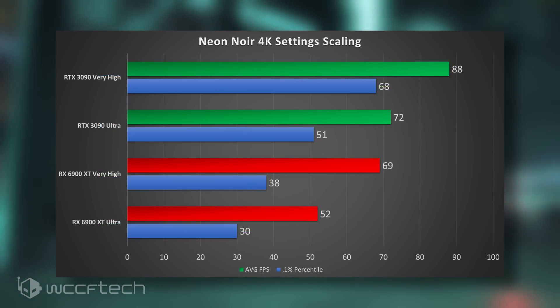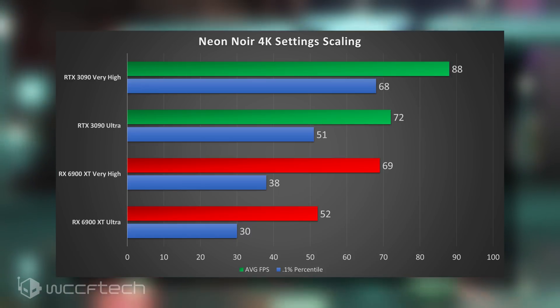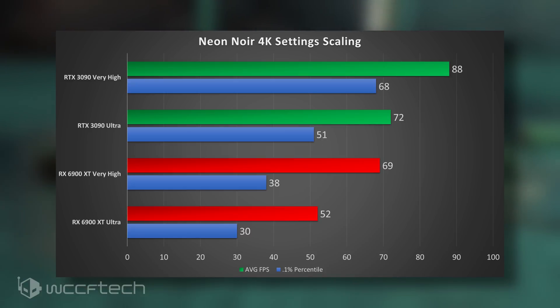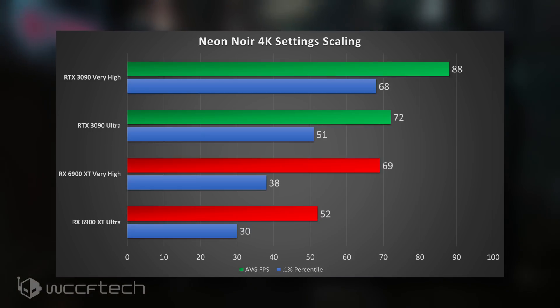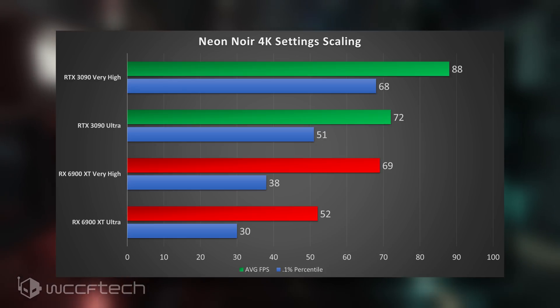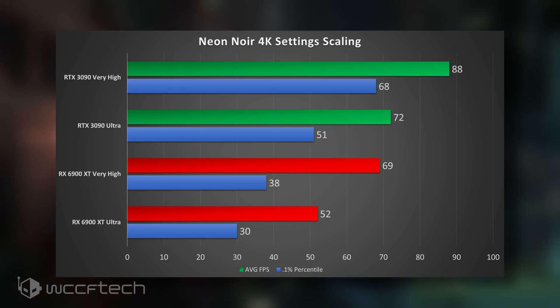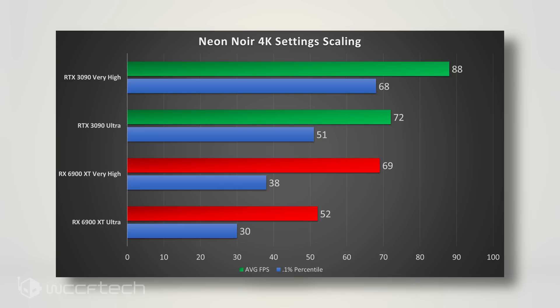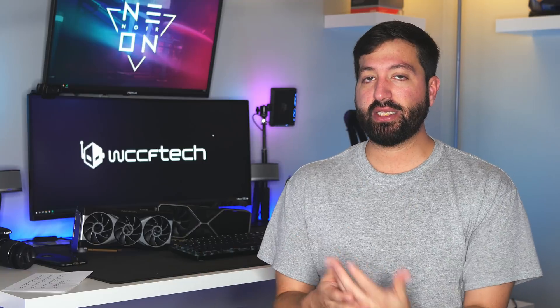Looking at quality scaling for the 6900 XT and the 3090 — comparing Very High versus Ultra at 4K — there's a considerable performance increase for the 6900 XT when moving to Very High instead of Ultra. However, even at Very High, the 6900 XT still falls behind the RTX 3090 at Ultra. The 3090 also gets a considerable boost, especially on 1% percentiles, when moving to Very High from Ultra.